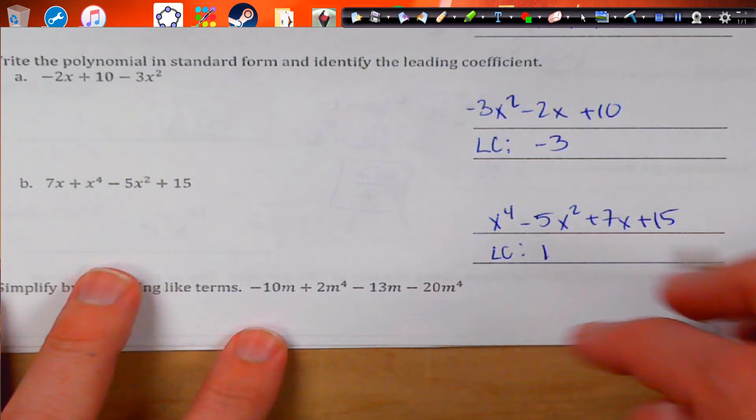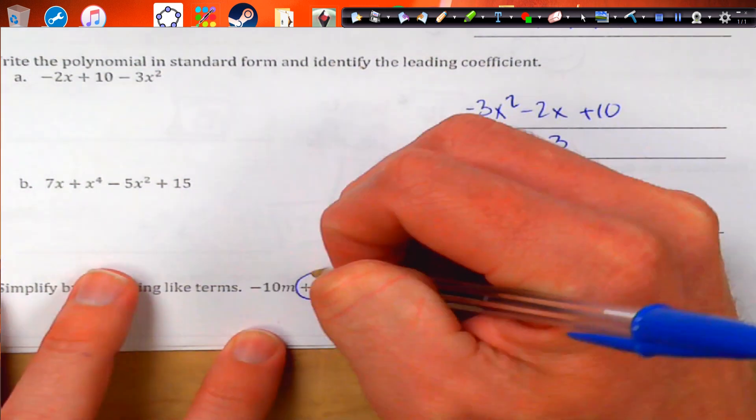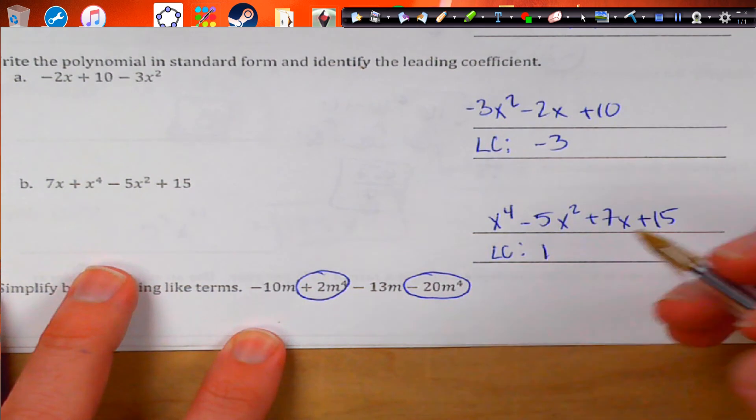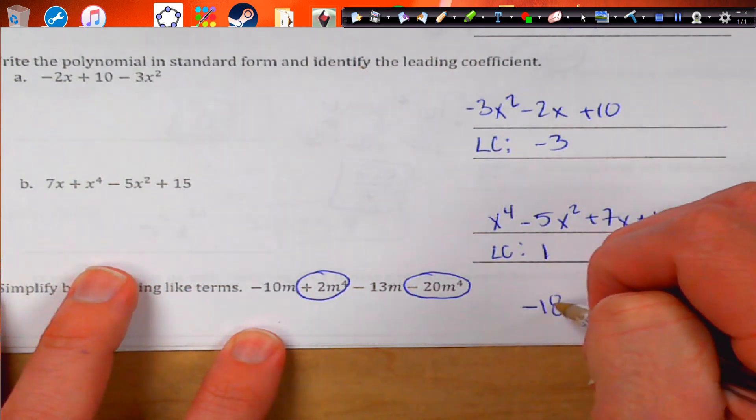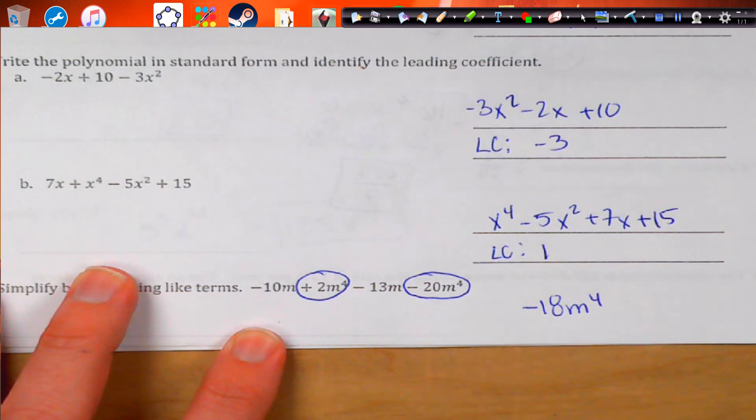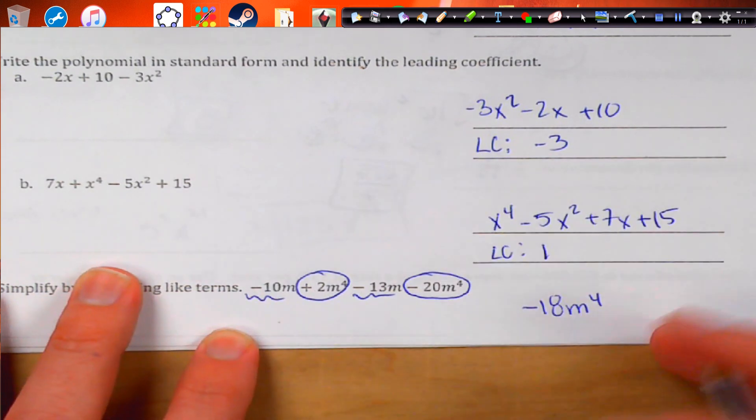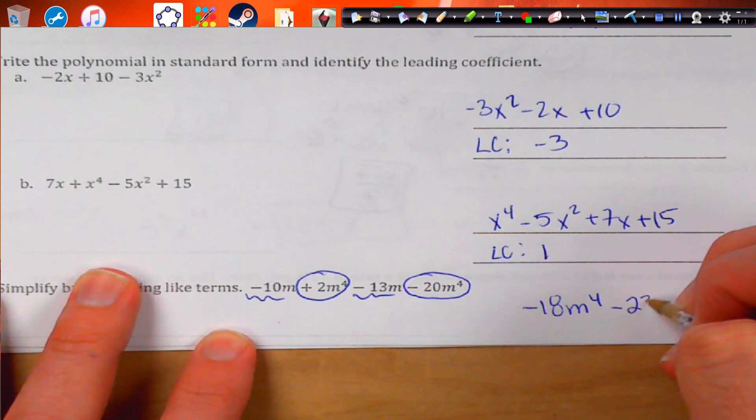Simplify by combining like terms. I'll first identify like terms, including their signs in front. So 2 plus negative 20, that's going to be negative 18m to the 4th. And then these are also like terms. And they're both negative, so we're going to get negative 23m.